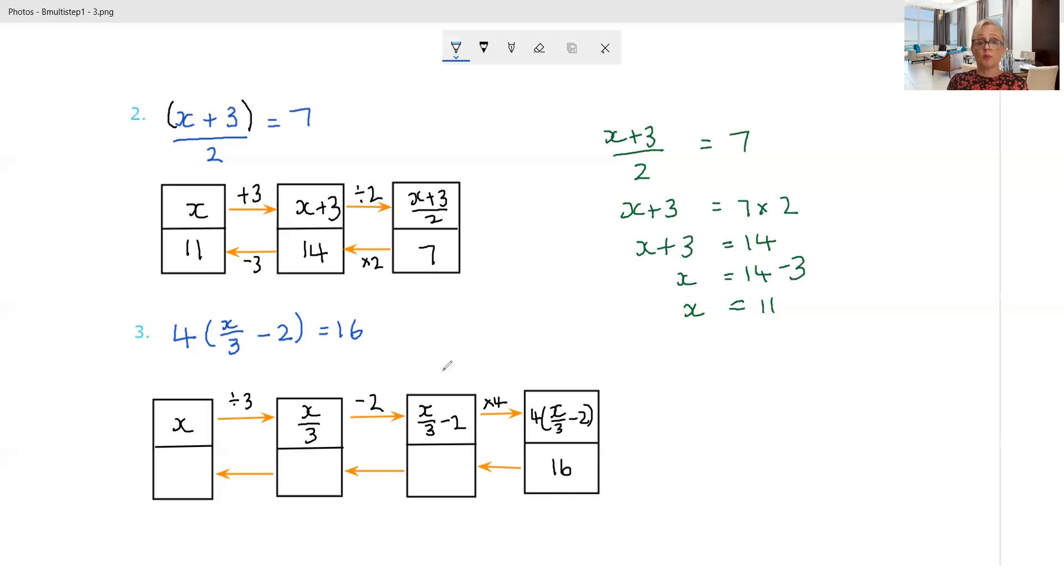Going back the other way, opposite thing in opposite order, we're going to divide by 4 to undo the timesing by 4. 16 divided by 4 is 4. Now we're going to undo subtracting 2 by adding 2. And finally, we're going to undo division by 3 by multiplying by 3. And we're going to get 18.